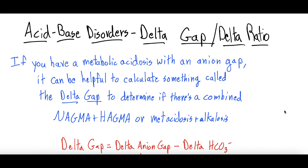Welcome back to the last video in the acid-base disorders series — this is video five, covering delta gap and delta ratio. If you're just seeing this video, there is a five-video foundational series. Starting here is fine if you only want delta gap and delta ratio, but if you need more background, start at video one. By the end of this video, you should have a solid grasp on acid-base disorder concepts.